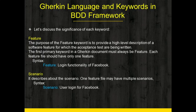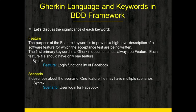The first keyword is the Feature keyword. The purpose of this Feature keyword is to provide a high-level description of a software feature for which the acceptance tests are being written. The first primary keyword in a Gherkin document or Gherkin file must always be Feature. Each feature file should have only one feature. For example, if we would like to test the login functionality of Facebook, the syntax would be: Feature: Login Functionality of Facebook.